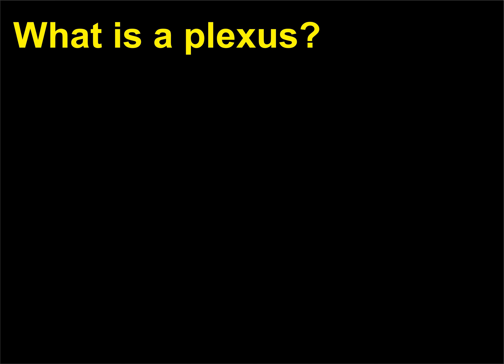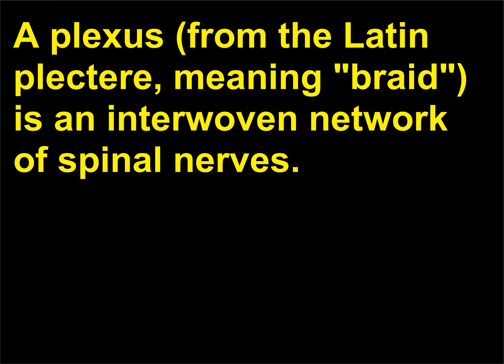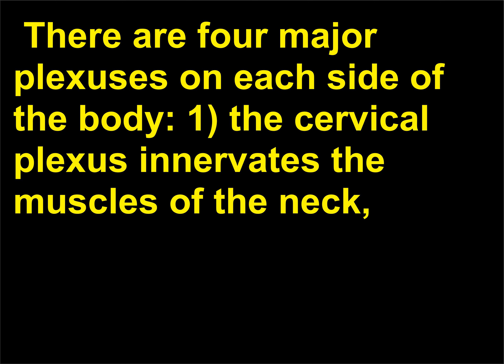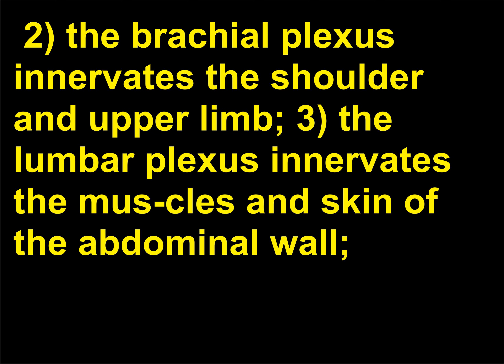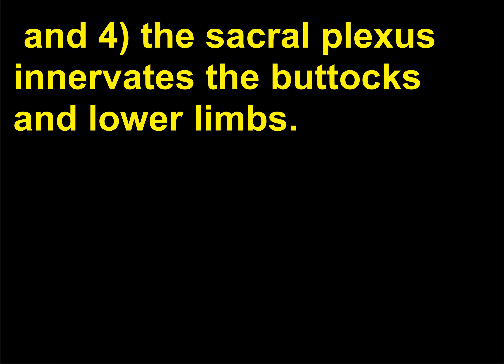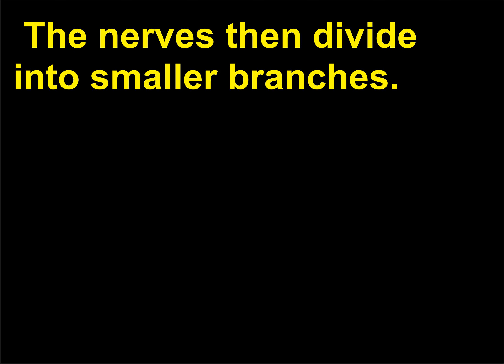What is a plexus? A plexus, from the Latin plectura meaning braid, is an interwoven network of spinal nerves. There are four major plexuses on each side of the body: (1) the cervical plexus, which innervates the muscles of the neck, the skin of the neck, the back of the head, and the diaphragm muscle; (2) the brachial plexus, which innervates the shoulder and upper limb; (3) the lumbar plexus, which innervates the muscles and skin of the abdominal wall; and (4) the sacral plexus, which innervates the buttocks and lower limbs. The nerves then divide into smaller branches.